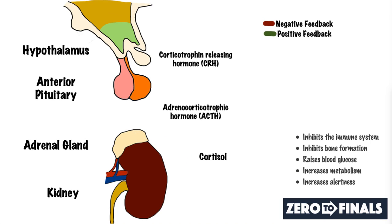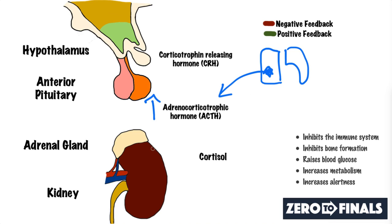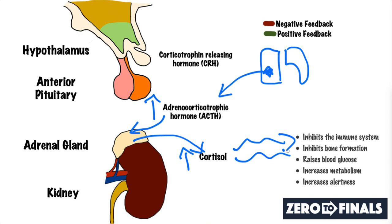The final cause is where you have a cancer somewhere else in the body — shown here as a small cell lung cancer in the lungs — that produces excessive amounts of ectopic ACTH. That excessive ACTH stimulates the adrenal gland to produce excessive amounts of cortisol, which then has all of these effects.